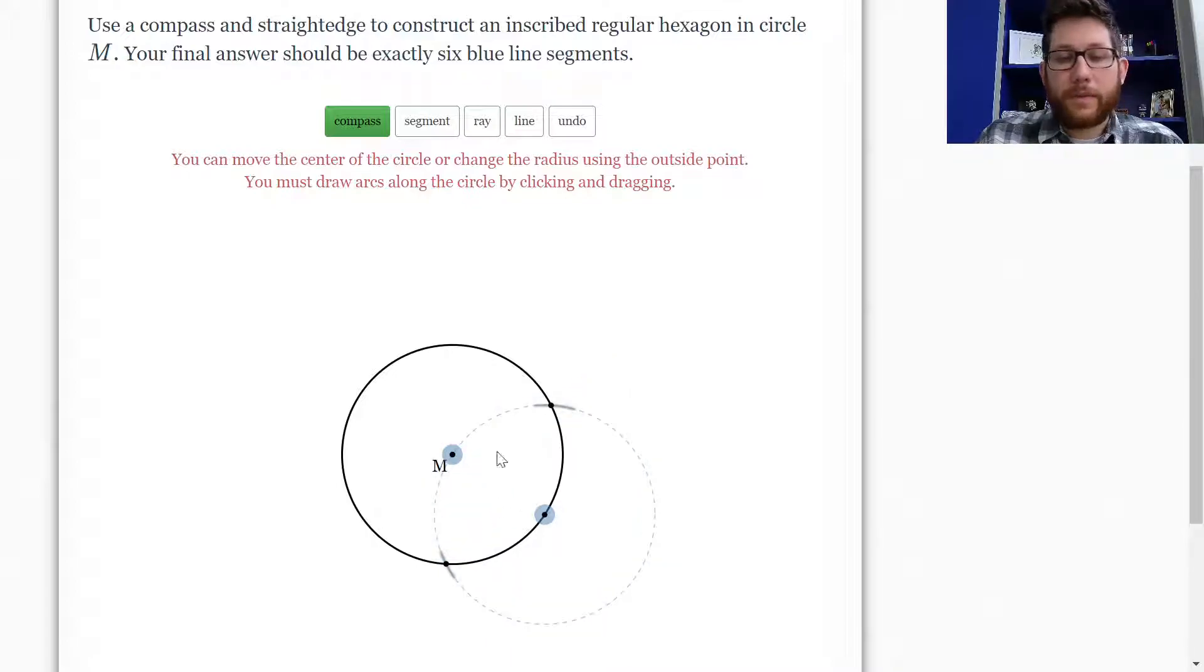Now, you really only have to make one of them. I think it's just a little bit faster if you make two. So I've made these two. And all we're going to do is we're going to pick up this compass and we're just going to drag it to the next spot. So notice what happens. I picked it up. I drag it to the next spot. And I'm going to make this mark here. And I'm going to make this mark here.